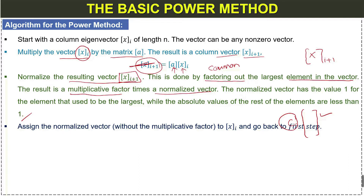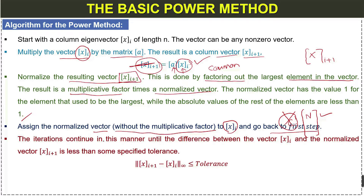Step four: assign the normalized vector (without the multiplicative scalar) to xi, and go back to step one — repeat this process. Step five: the iterations continue in this manner until the difference between the initial vector xi and the normalized vector xi+1 is less than some specified tolerance.